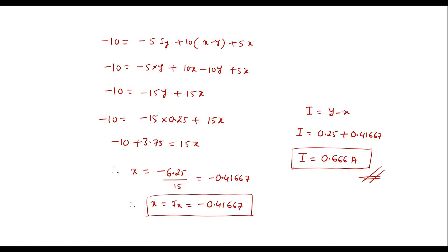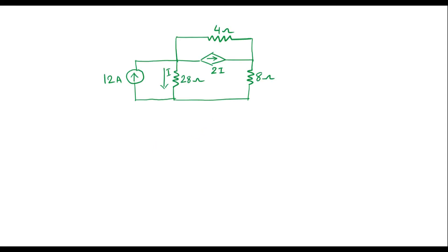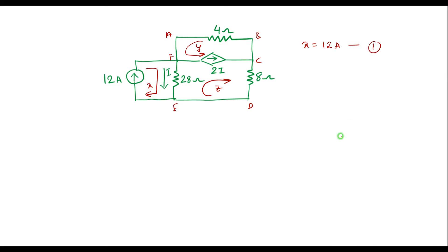Now let me consider the second numerical. In this circuit we can see there is a current-dependent current source. Let the nodes be a, b, c, d, e, and f. Let the current through this loop be x, through this loop be y, and through this loop be z. We can see that current x and the 12 amp source are in the same loop, so x equals 12 amps — call this equation 1. The current through the 28 ohm resistor is i, and both x and z are flowing through it in opposite directions, so i equals x minus z.